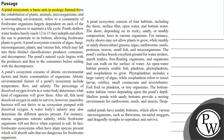A pond ecosystem is a basic unit in ecology formed from a coexistence of plants, animals, microorganisms, and a surrounding environment. It refers to a community of freshwater organisms largely dependent on each of the surviving species to maintain a life cycle.